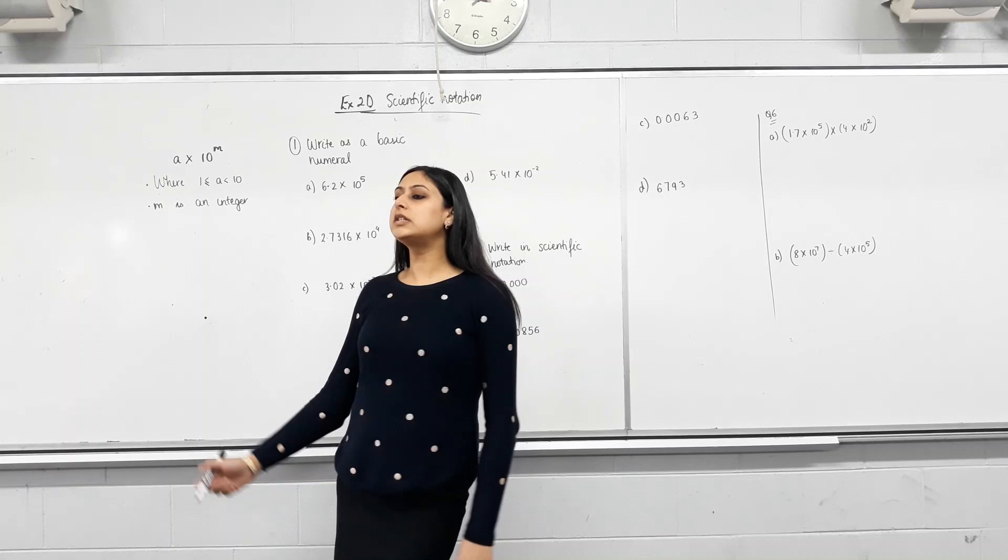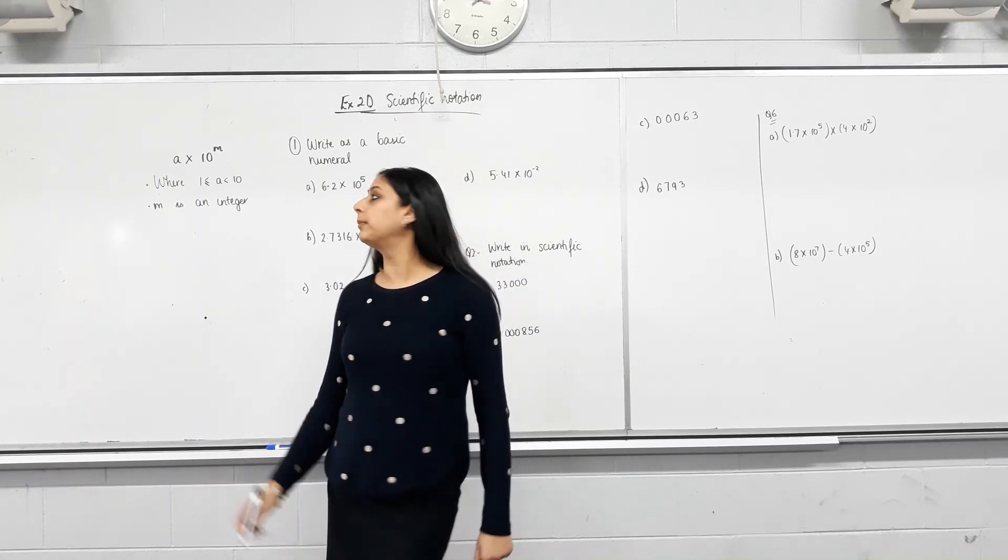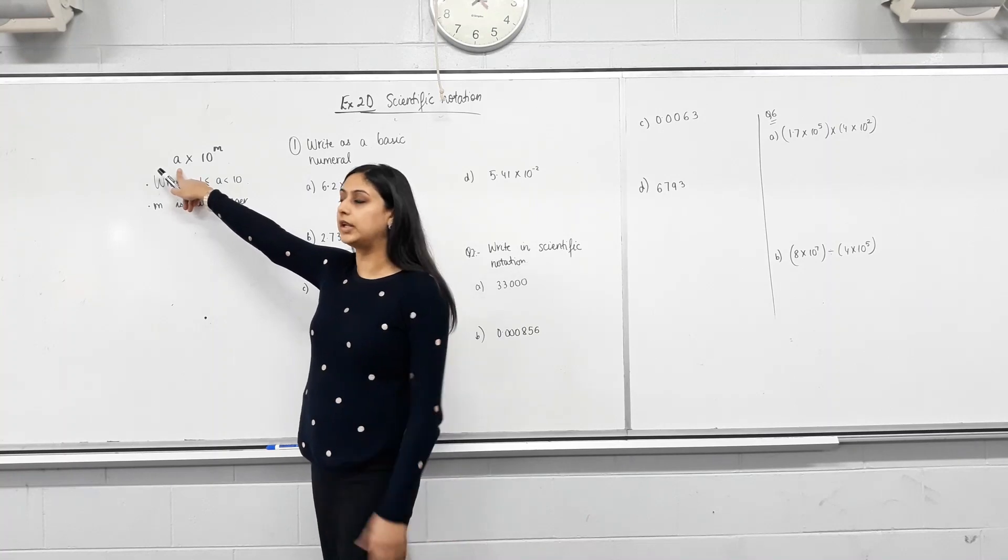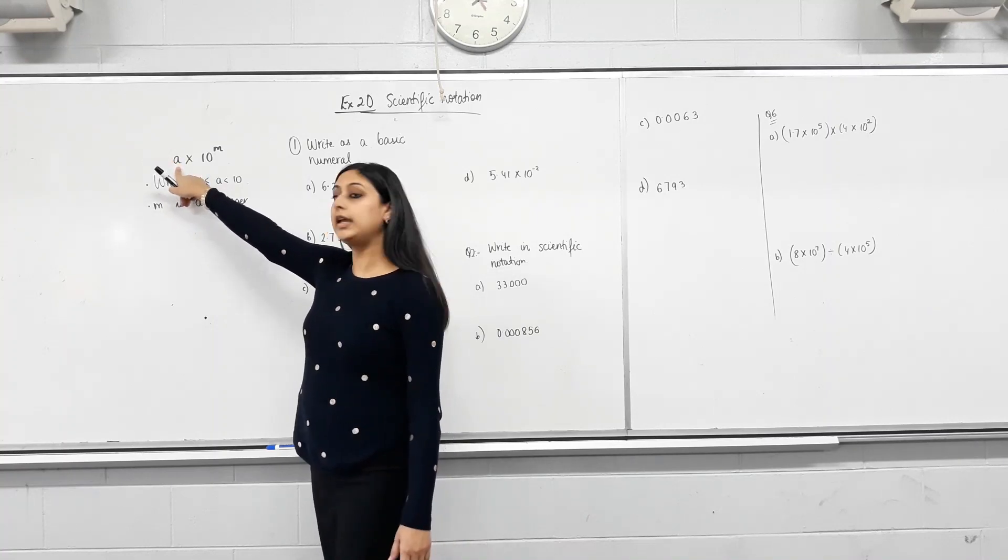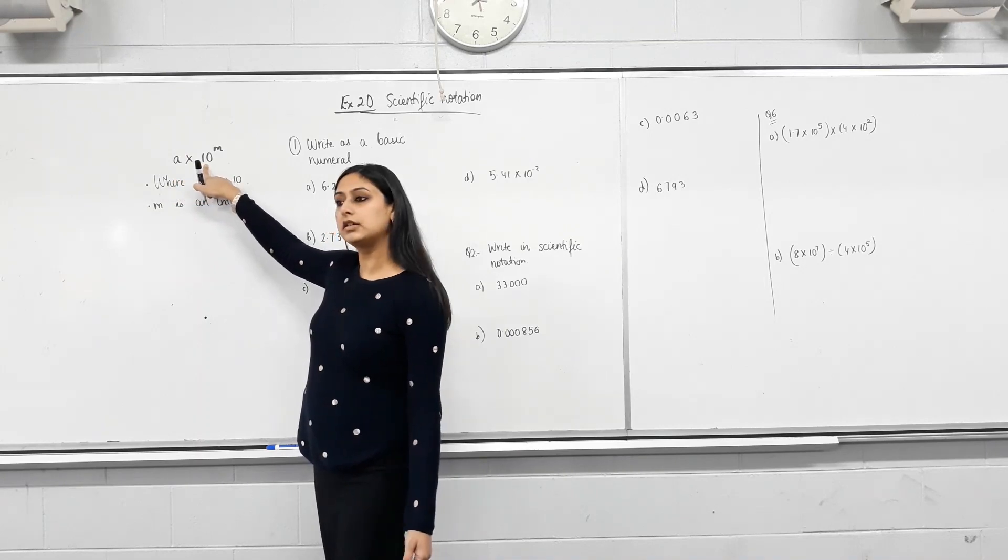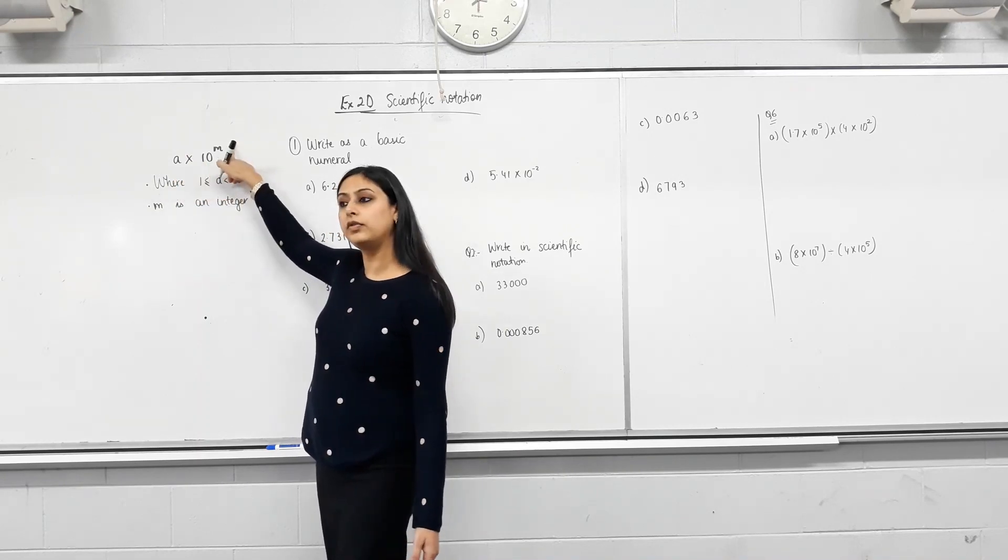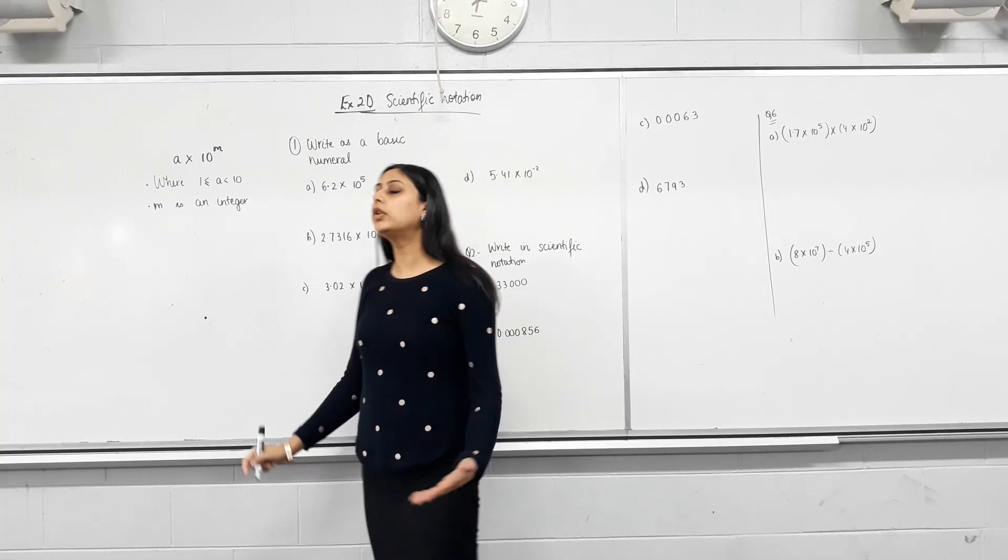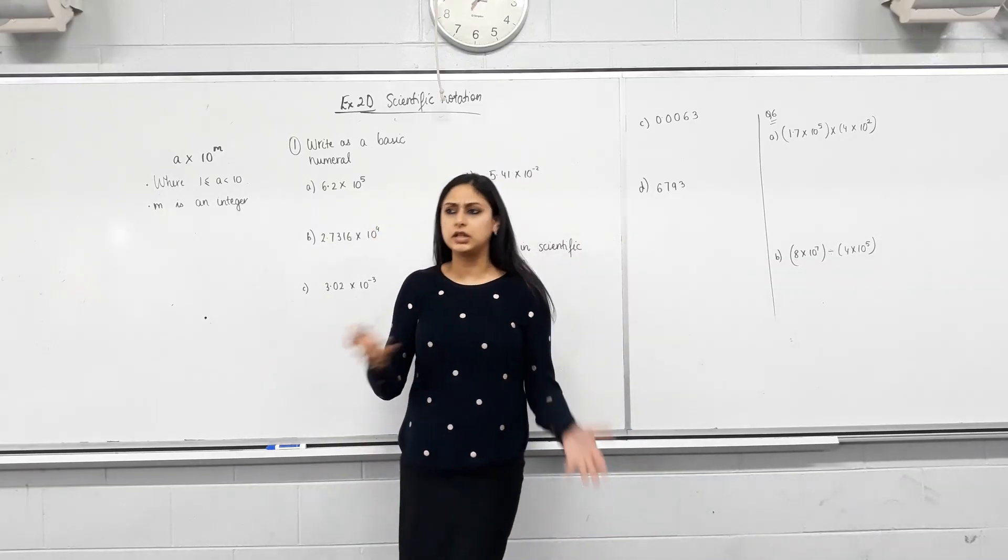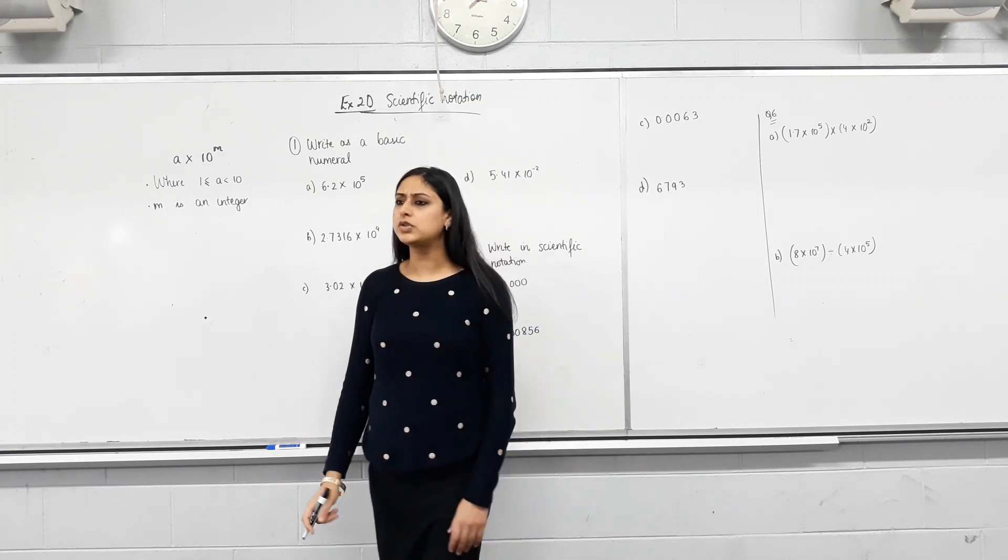Okay, so scientific notation is when we write a number in this form. A is a number between 1 and 10 and then this is 10 to the power of something, right? Why do you think we need to write some number in this form rather than writing in the normal form that we used to?